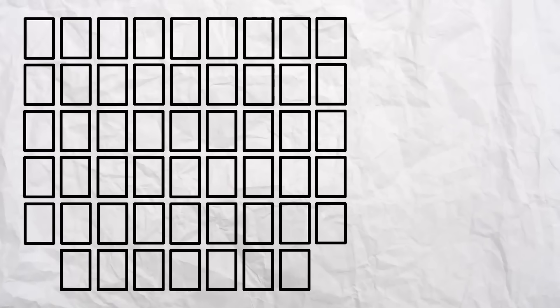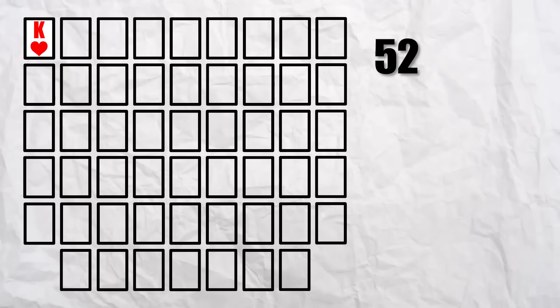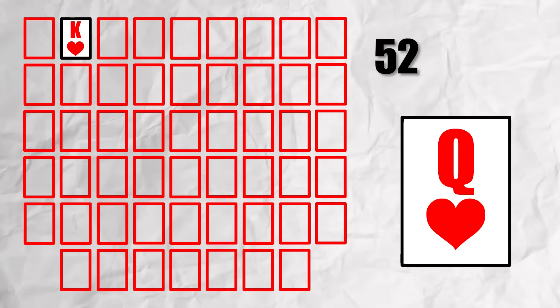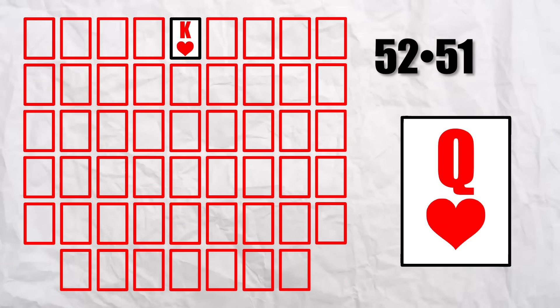If we lay out our cards, we see that there are 52 different positions that the King of Hearts can be in. For each of these 52 different variations, there are 51 locations that the Queen of Hearts can be in.